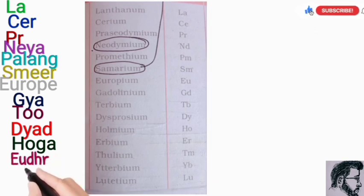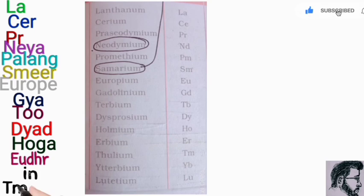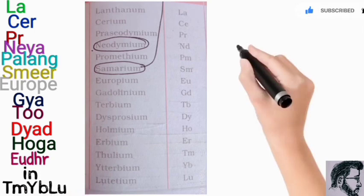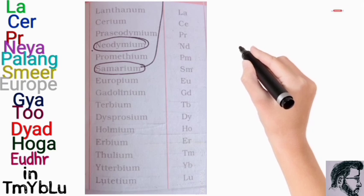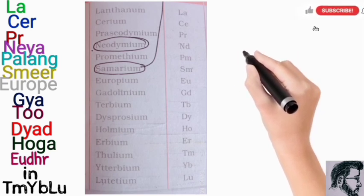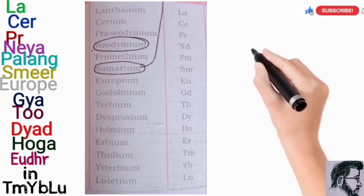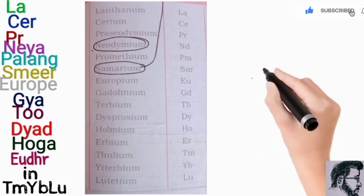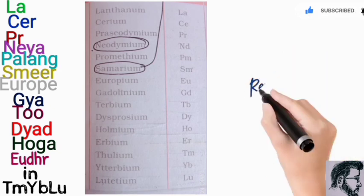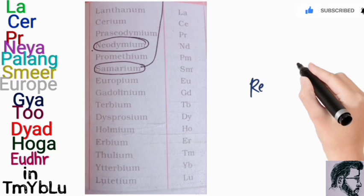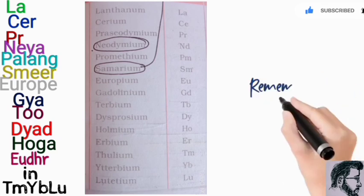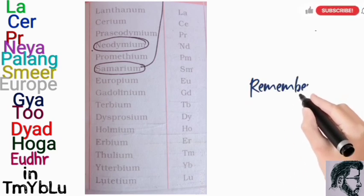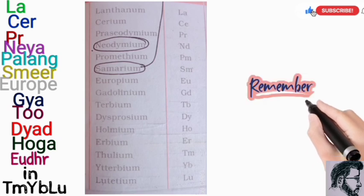Think of it as: somewhere in Europe there is a place or a house named 'Tum Ya Blue.' 'Tum Ya Blue' here refers to the last three members of the lanthanide series — that is, thulium, ytterbium, and lutetium. So 'Le' means lanthanum, 'sir' means cerium, 'par' means praseodymium, 'naya' means neodymium, and so on going downward. This trick will help you remember the members of the lanthanide series.